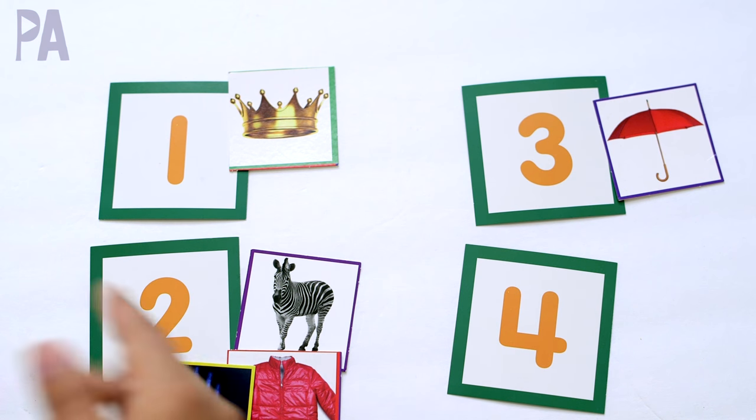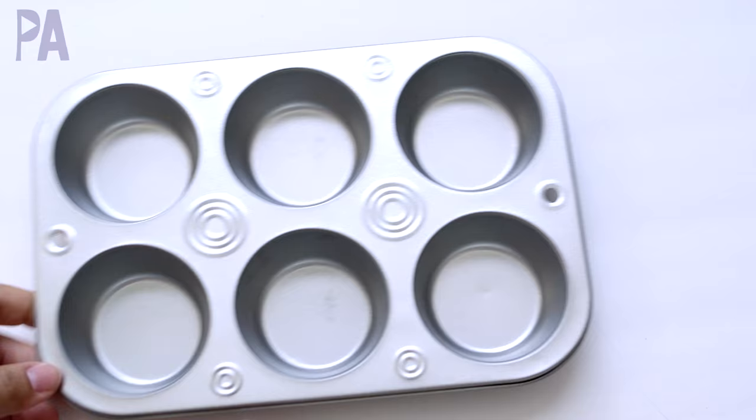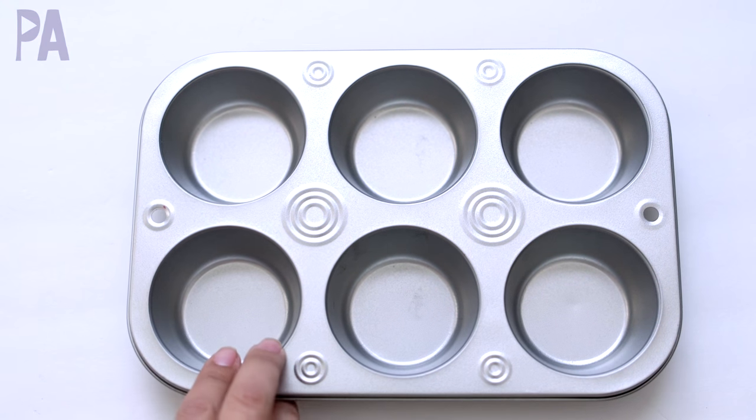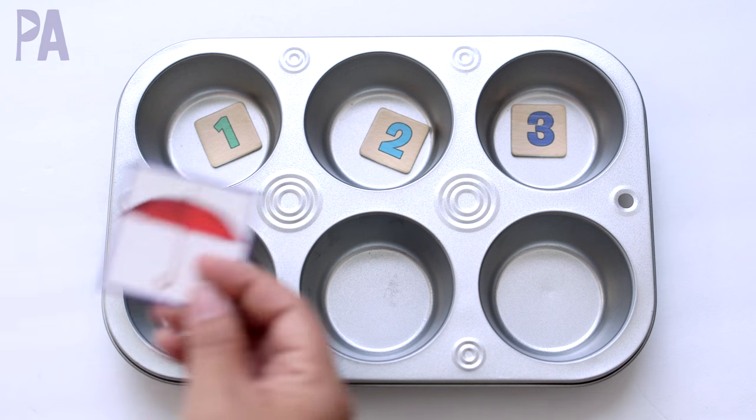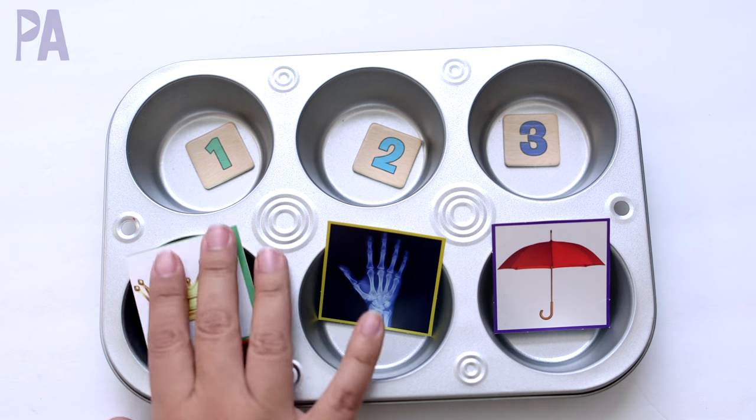If you want to get really tactile, you can get a muffin tin like this. This one came from Dollar Tree, and then you'd put your flash cards in the other side, matching like that.